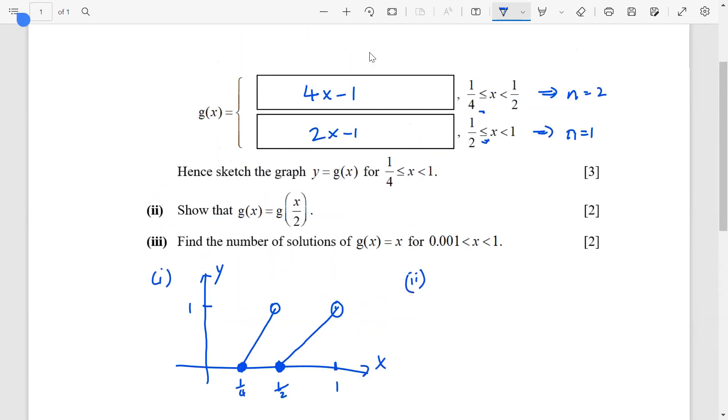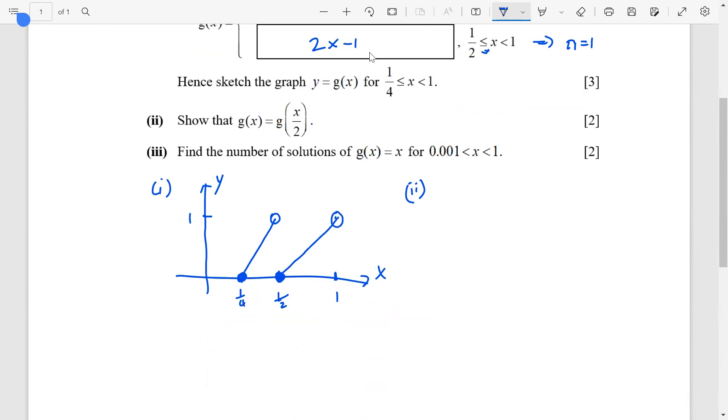Your g(x) being 2 power nx minus 1, where n is all integers. And x is between 1 over 2 power n, 1 over 2 power n minus 1. g(x/2)...